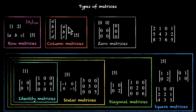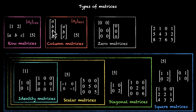Similarly, for a matrix to be a column matrix, the number of columns is fixed at one, so the order is M by one — M could be any number, but the number of columns has to be one. For square matrices, the order has to be N by N, where the number of rows and number of columns match.